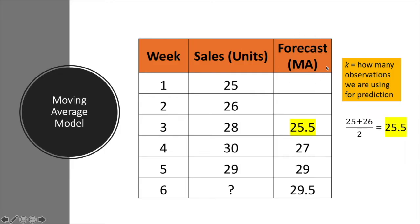Before we do forecasting using a moving average model, we first need to know what is meant by the notation K. K refers to how many observations we are using for prediction. So let's say in our case here, we want to predict sales for week 3. I'm using the observation from week 1 and the observation from week 2 to forecast the sales of week 3.